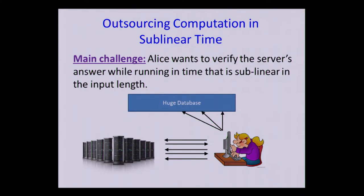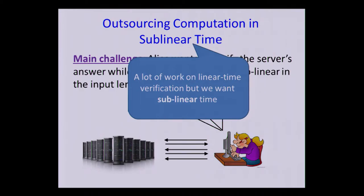So Alice wants to be able to verify this claimed result that the server claims is true. So there's been a lot of work on outsourcing computation in a way that you can verify in linear time, which is, of course, very remarkable because just performing the computation itself could take a lot more than linear time. But in our setting, that won't do because, as I said before, Alice can't even afford to just run in linear time in her input. So we want sublinear time verification.